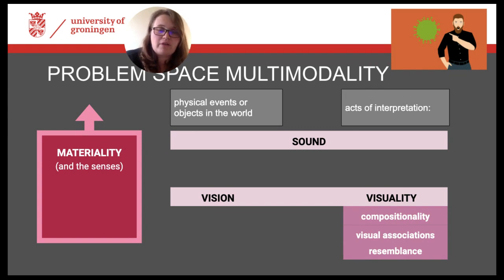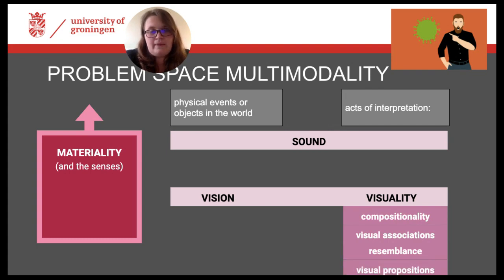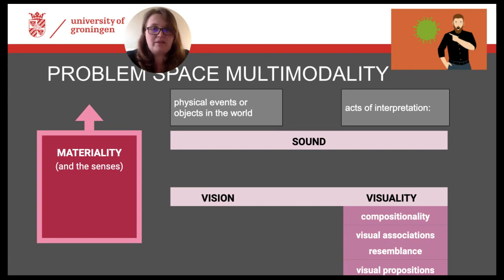Another interesting question currently of particular interest in visual and multimodal studies is whether visuals can assert or lie, and many argue that they cannot. This means that images cannot propose an idea that is true or false — they cannot have propositions. We will come back to this only when we have a more detailed definition of the semiotic mode and a better understanding of the contextual interpretation needed for every multimodal artifact. Keep in mind that it is always an important aspect of multimodal analysis to ask for the expressive functions and power of the semiotic elements in a multimodal ensemble.